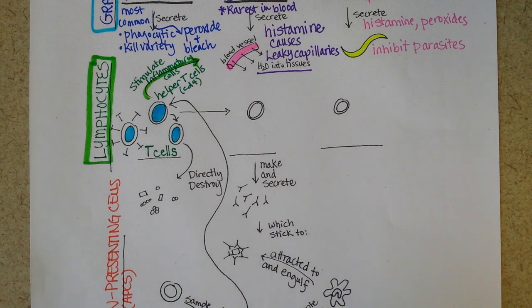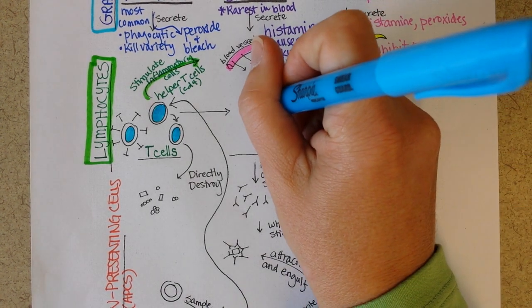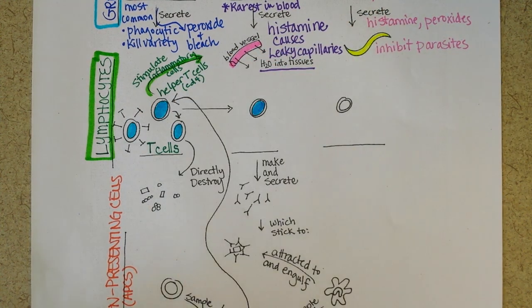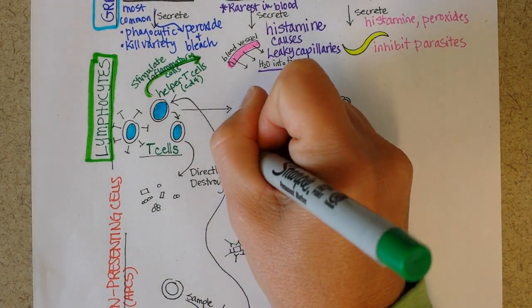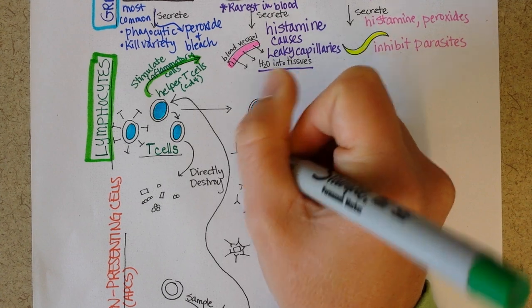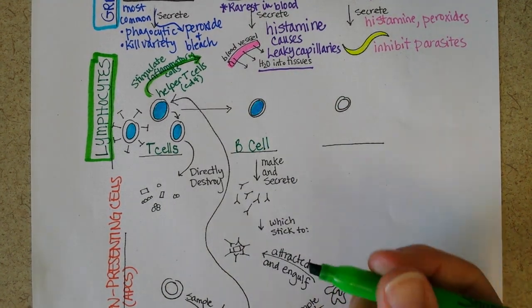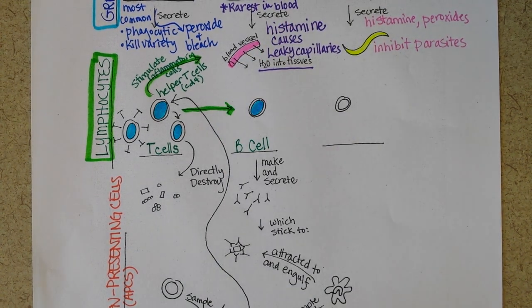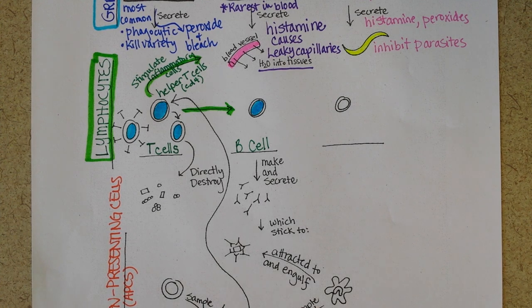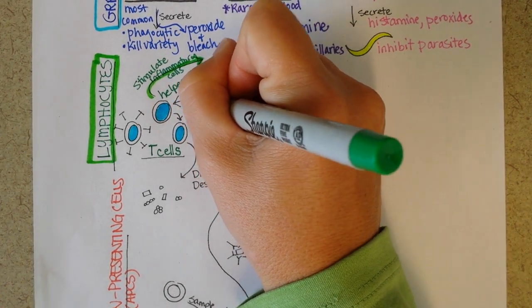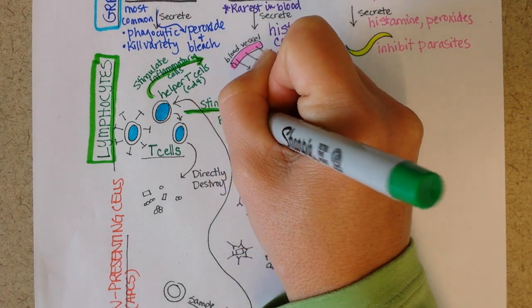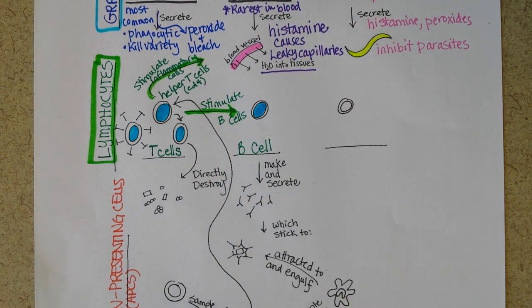A second important job that helper T cells do is that they stimulate a different kind of lymphocyte known as a B cell. In many cases a B cell cannot do anything until it's activated by a helper T cell. So the second job is that helper T cells stimulate B cells, and B cells are going to make antibodies.